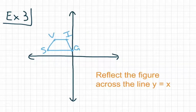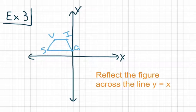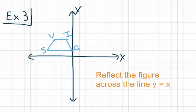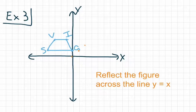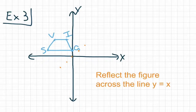Unlike the previous two examples — where we reflected across the y-axis or x-axis — for the line y equals x, that line is not drawn on the graph, so we have to graph it ourselves. The line y equals x has a slope of 1 over 1 and a y-intercept of 0. Starting at the origin, we go up 1 over 1, up 1 over 1, and also down 1 left 1 in the opposite direction. Use your ruler to draw that line.